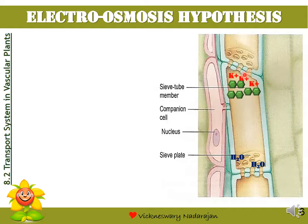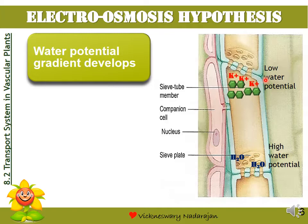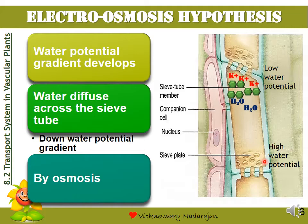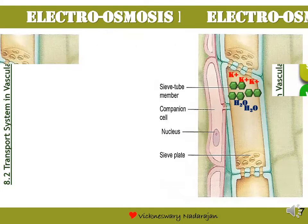What has happened is the potassium ions and sucrose begin to accumulate at the upper part of the sieve tube, causing a low water potential to develop. At the lower part of the sieve tube, the absence of potassium ions and sucrose causes the lower part to have a high water potential. So now a water potential gradient has developed, and because of that, the water molecules will begin to diffuse down the water potential gradient via osmosis. That is why the hypothesis was given the name electroosmosis — 'electro' due to the potassium ions causing an electrochemical gradient, and 'osmosis' due to the movement of water down the water potential gradient.